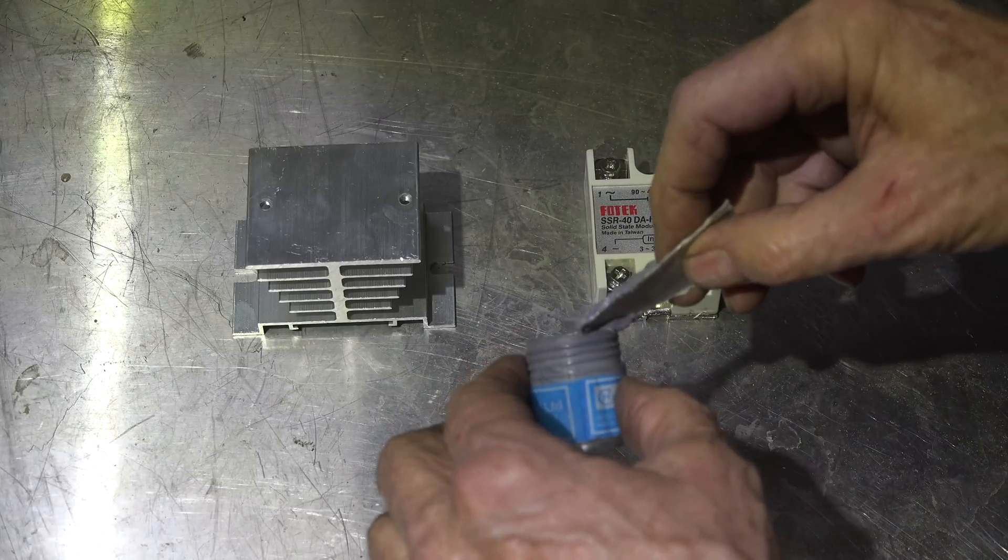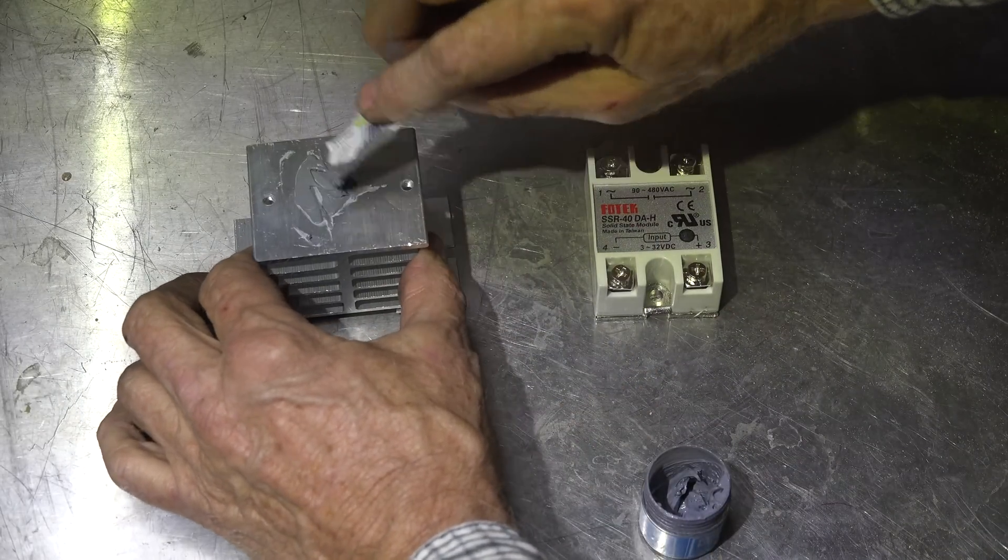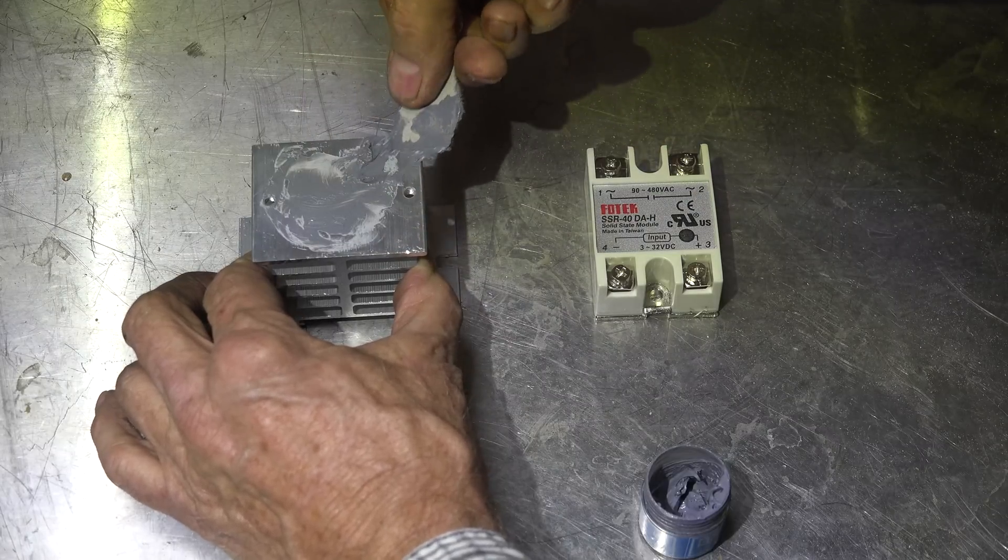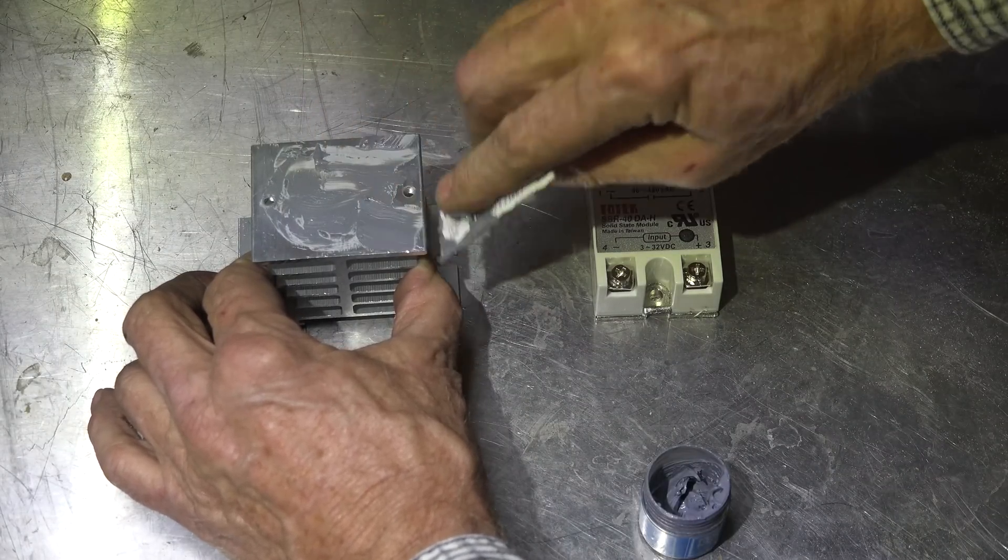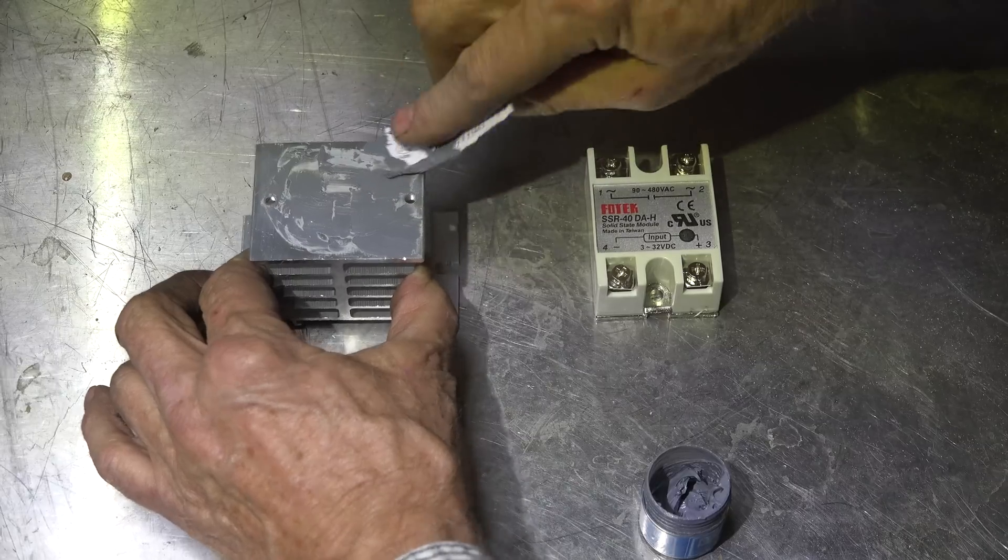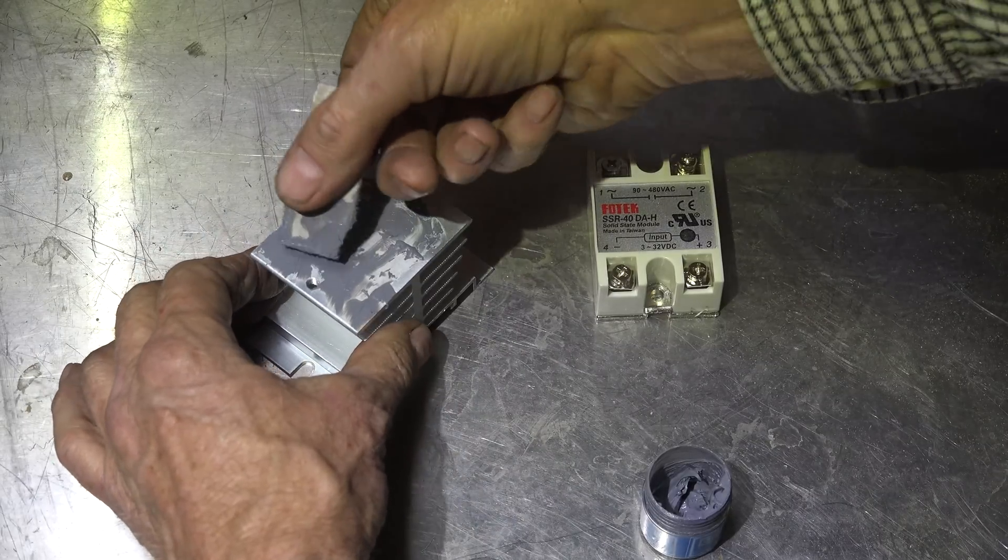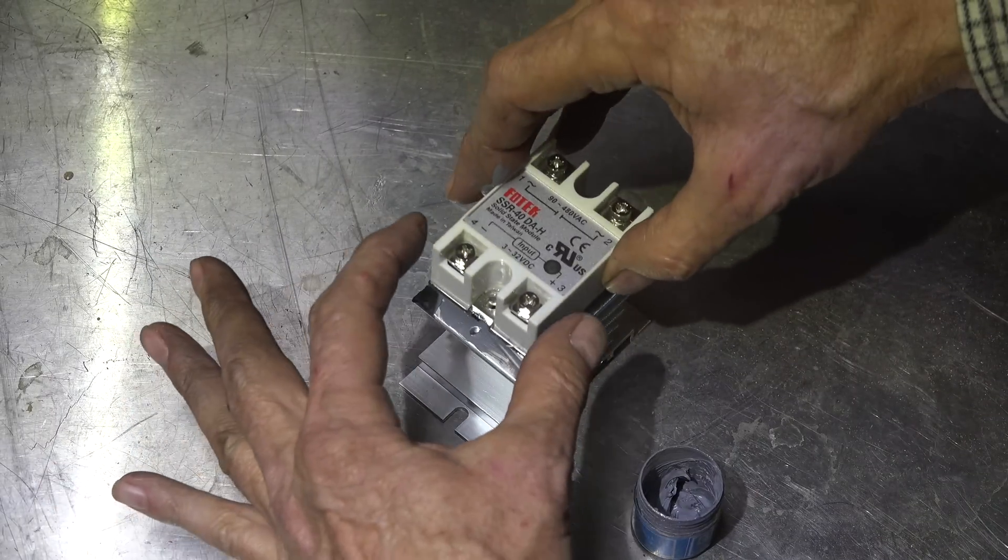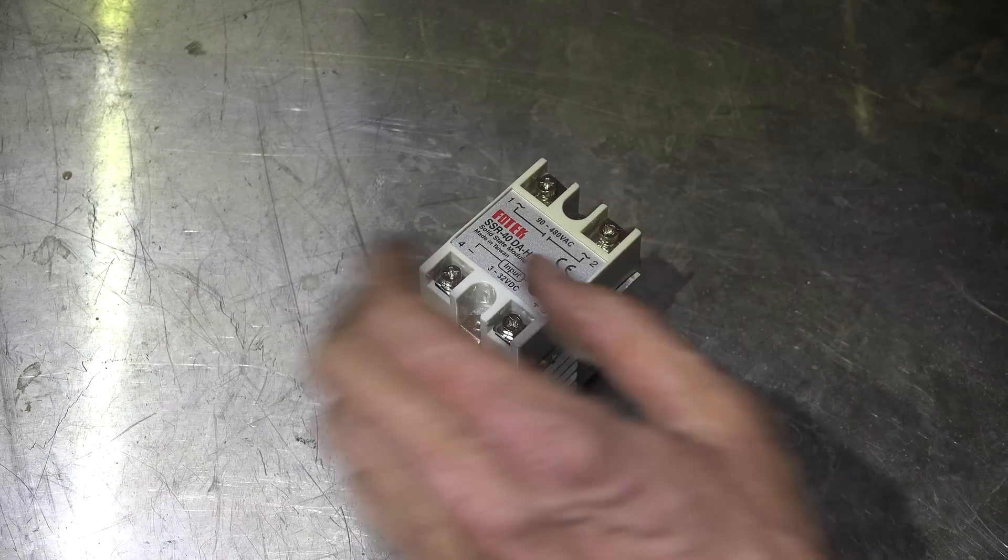Probably got more than I need there. You don't need a whole lot of this stuff. That little container goes a long way. Okay, the next thing is the really complicated part here: we put the doohickey on it.